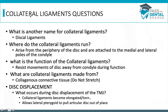Review questions for the collateral or discal ligament: Another name is the discal ligament, with medial and lateral varieties. The ligaments run from the medial and lateral poles of the condyle to the medial and lateral poles of the disc. Their function is to resist movement of the disc — preventing dislocation of the disc. They are made from collagenous connective tissue. During disc displacement, the collateral ligaments become elongated or torn, allowing the lateral pterygoid muscle to pull the articular disc out of place.